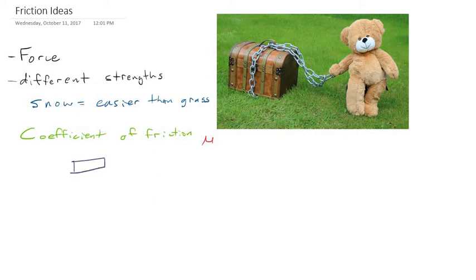So it makes sense to think about an object with a rough surface on it and it might be sliding along another rough surface. And we know that that is going to be a very high coefficient of friction. It's going to be very difficult to move those two objects.